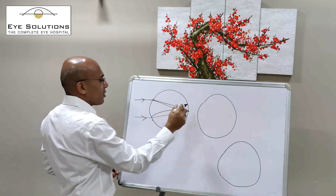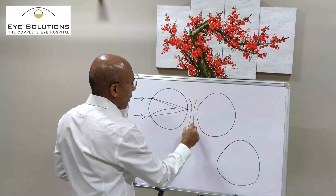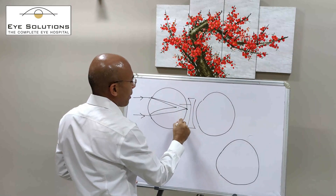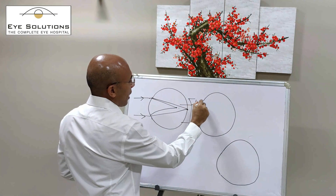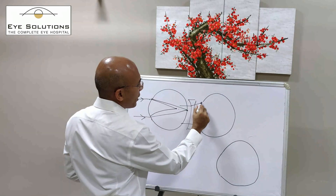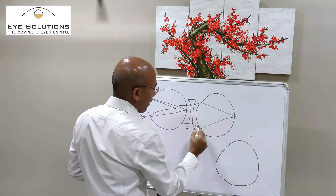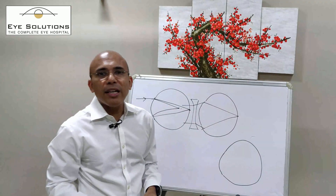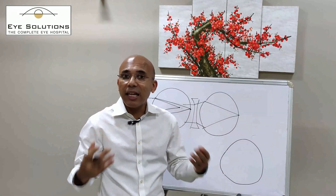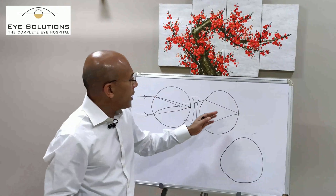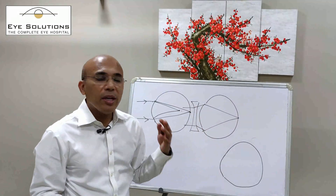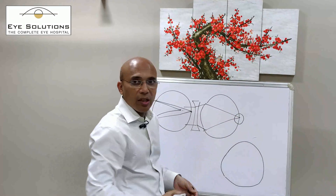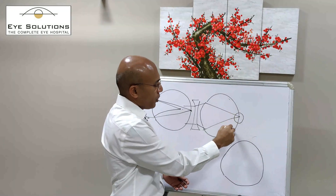What these minus-numbered lenses do is, if you put a minus-numbered lens here, the rays of light that are coming to the lens move outwards and then they meet on the retina. Because of these minus-numbered lenses, we are able to see things clearly. Unfortunately, when we say we see clearly, we are only referring to the central vision — we are not talking about the peripheral vision.